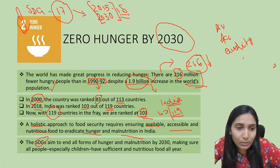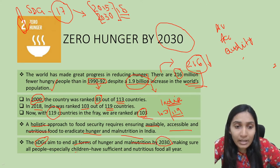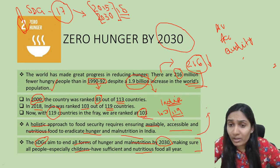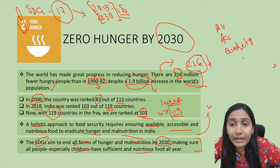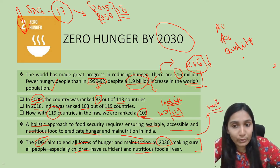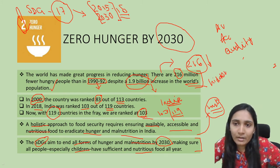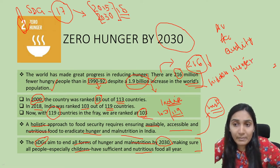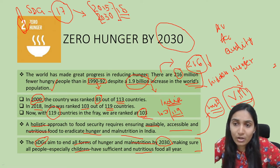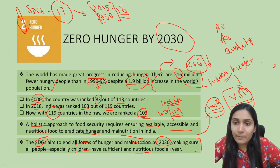The SDGs aim to end all forms of hunger and malnutrition by 2030, making sure all people — especially children — have sufficient nutritious food all year. SDG does not only focus on merely providing food, but also on providing nutritious food. Nutrition means access to micronutrients — vitamins and minerals. The absence of micronutrients in a person's diet is known as hidden hunger, a very important term.